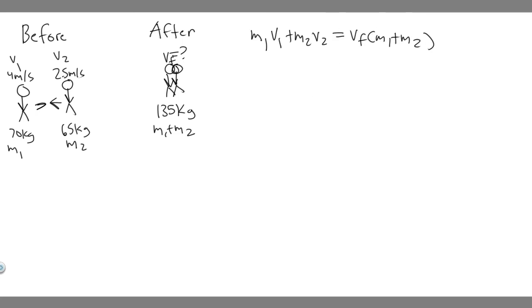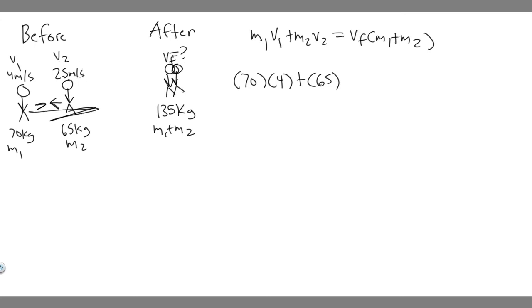We have every variable except V_final. Plugging in: 70 × 4 + 65 × (−2.5) = V_final × 135. We define right as positive and left as negative, so V1 = +4 m/s and V2 = −2.5 m/s. Dividing both sides by 135 gives us V_final.